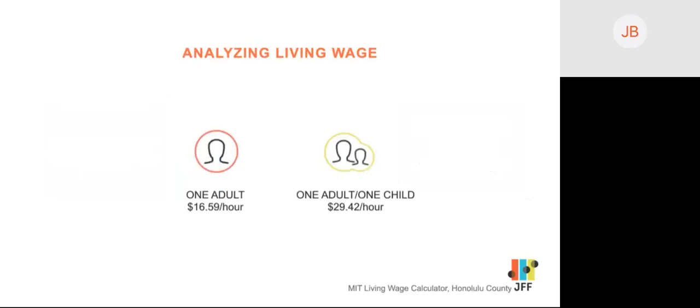An important anchor for our labor market analysis is the regional living wage. We at JFF use the MIT living wage calculator to set our baselines — you can see here the data is again for Honolulu County. At JFF, we use the standard of living wage for one adult supporting one child, and we encourage our partners to do the same. We use this number because many young people starting before they even enter high school have financial responsibilities, and it can take time to access entry-level opportunities even after completing a pathway, during which time families grow and financial responsibilities increase.